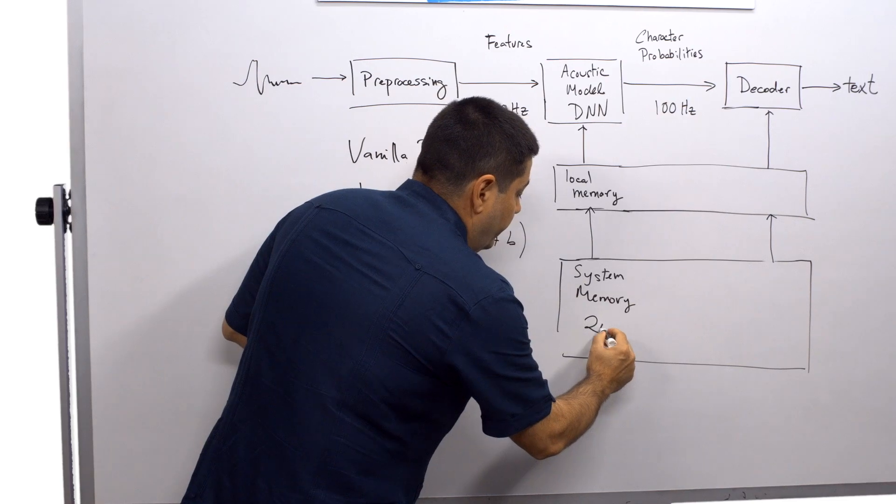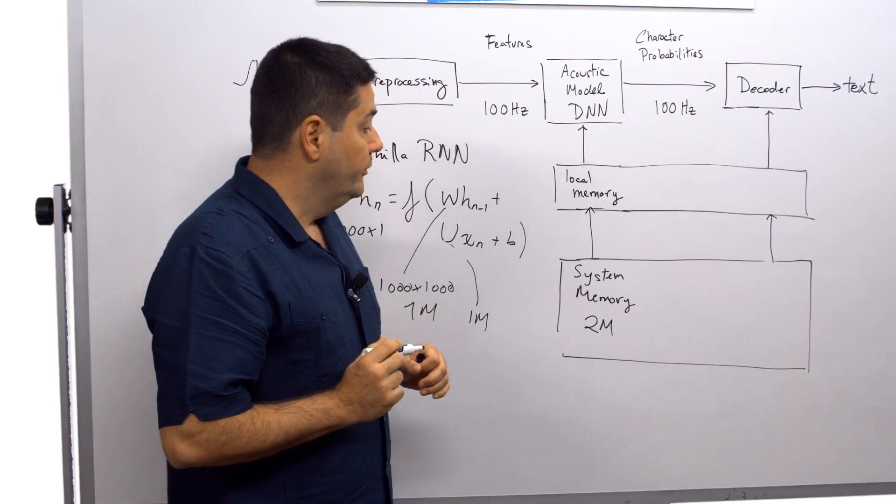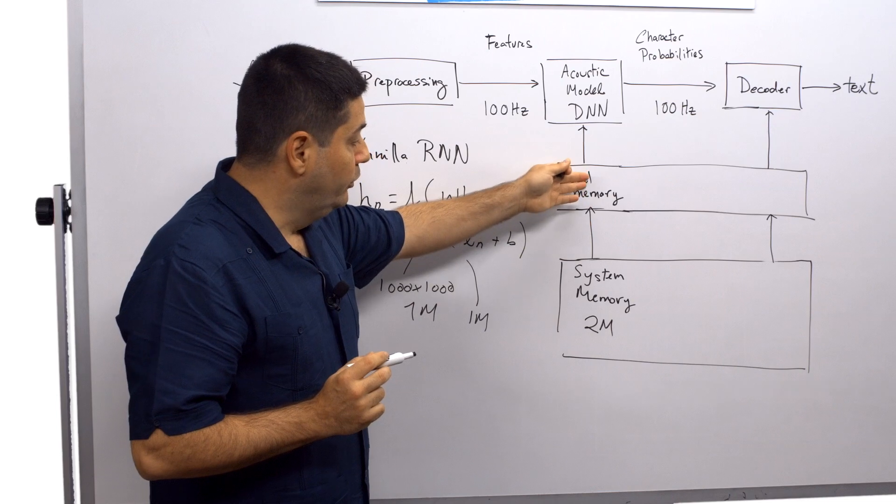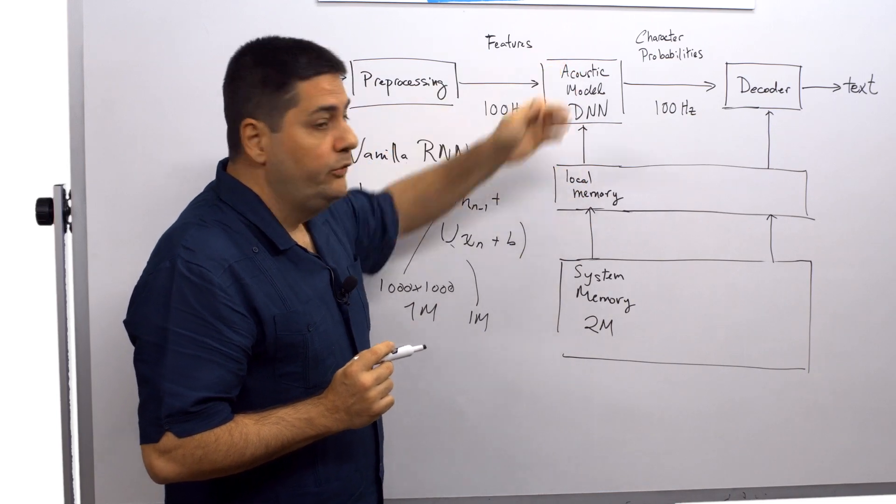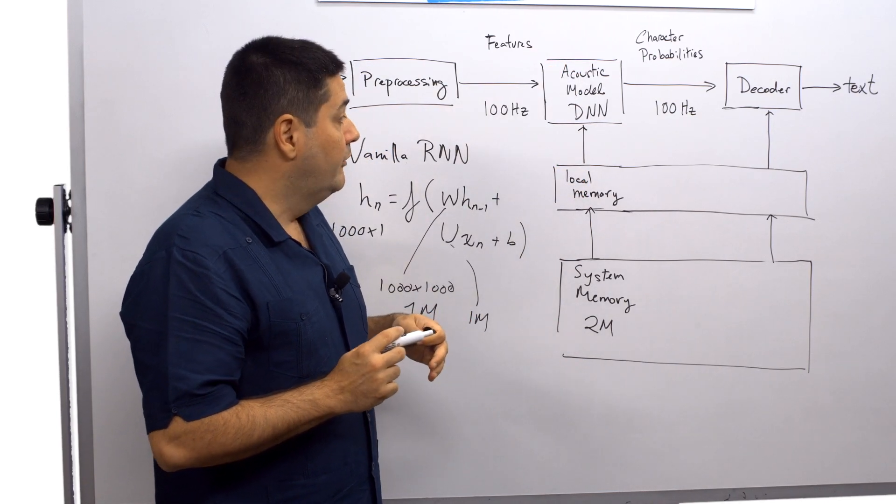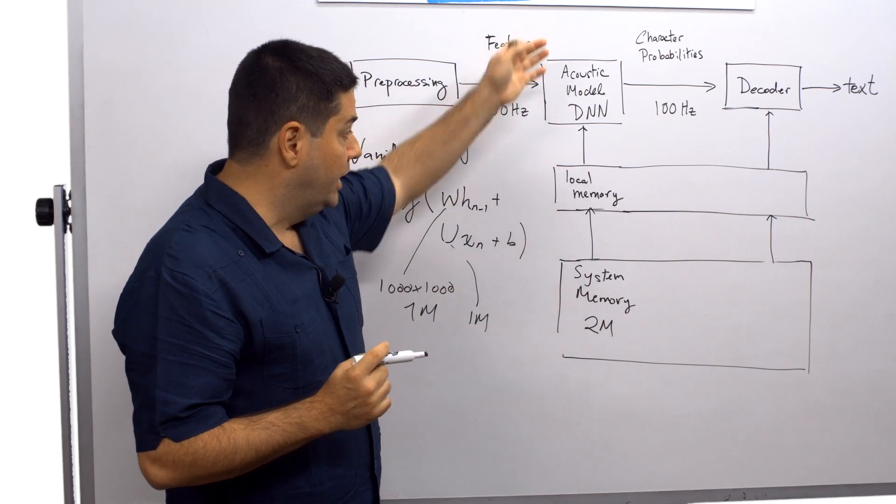So now we have 2 million parameters in here. And those are going to be pipelined through local memory into the DNN for processing in chunks. And this is done in a pipeline fashion.